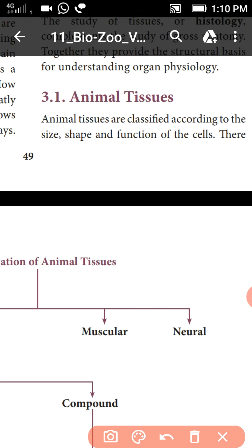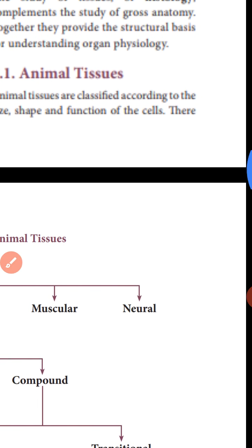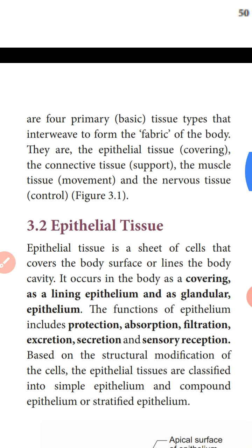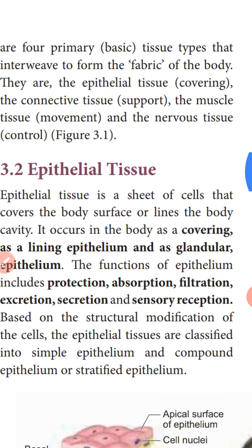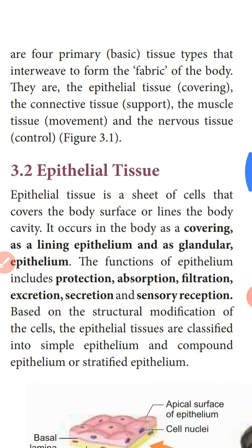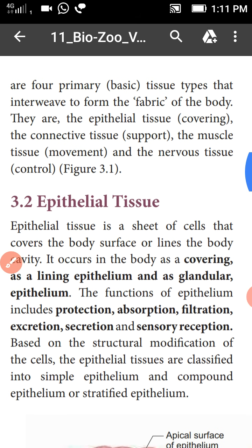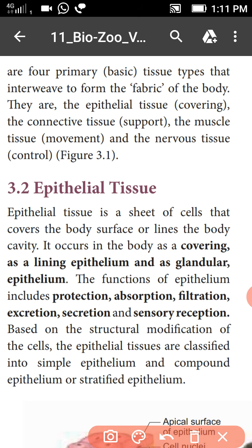Animal tissues are classified according to the size, shape, and functions of the cells. There are four primary tissue types that form the fabrics of the body.